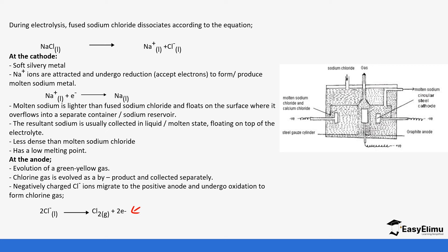The molten sodium is usually lighter than the fused sodium chloride, so it floats on the surface where it overflows into a separate container. You can see the density of sodium is lower than sodium chloride. The resultant sodium is collected in molten state floating on top of the electrolyte. It's less dense than molten sodium chloride and it has a low melting point in comparison to sodium chloride.